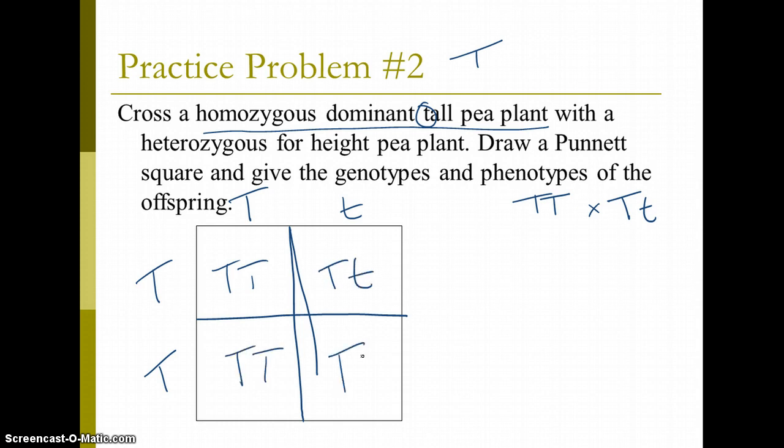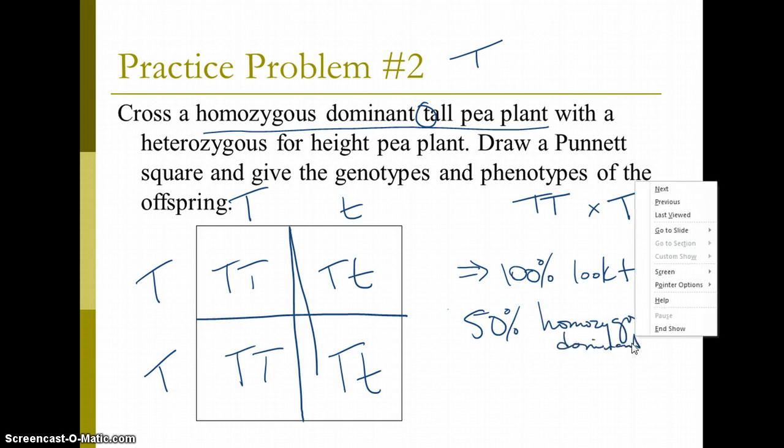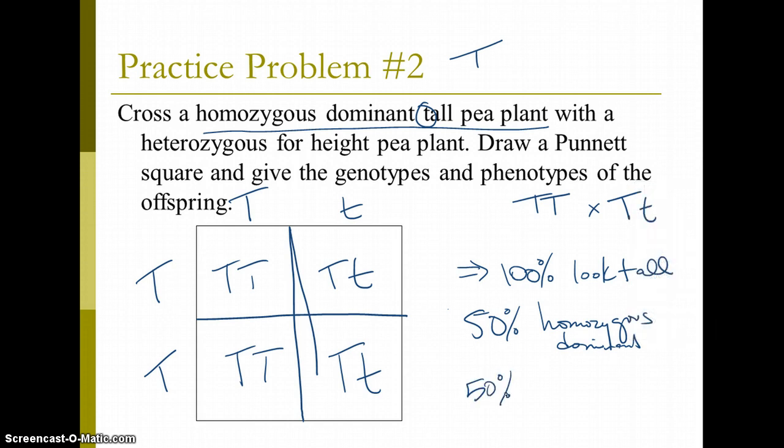And I know that 100%, what that means is that 100% of their offspring will look tall. They'll all have a tall phenotype, but 50% of them are homozygous dominant.